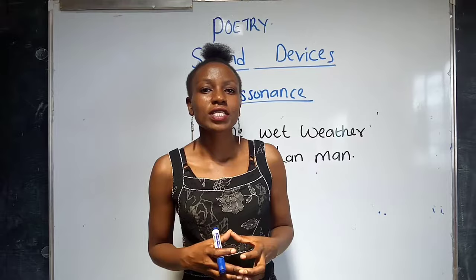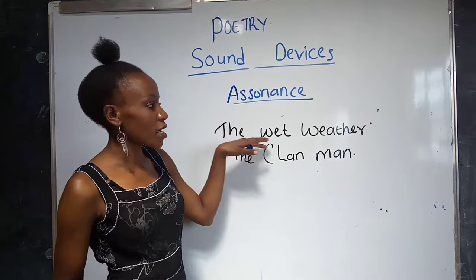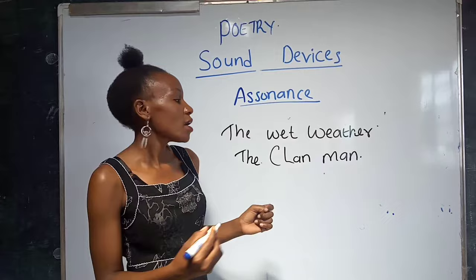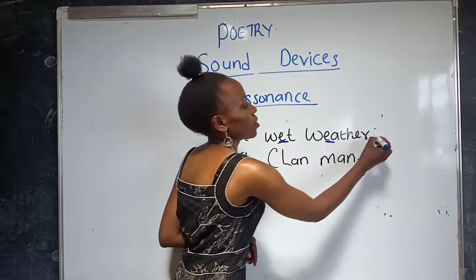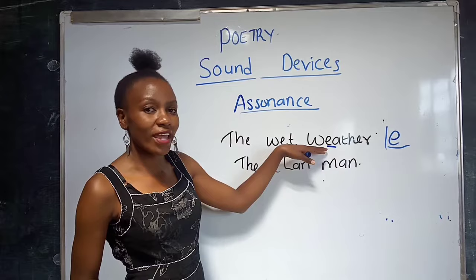For example, the word 'weather' — we are looking for vowel sounds. The vowel sound we have here is A. And 'wet' — it's also A. And 'weather' — we have an A. And this qualifies as assonance.